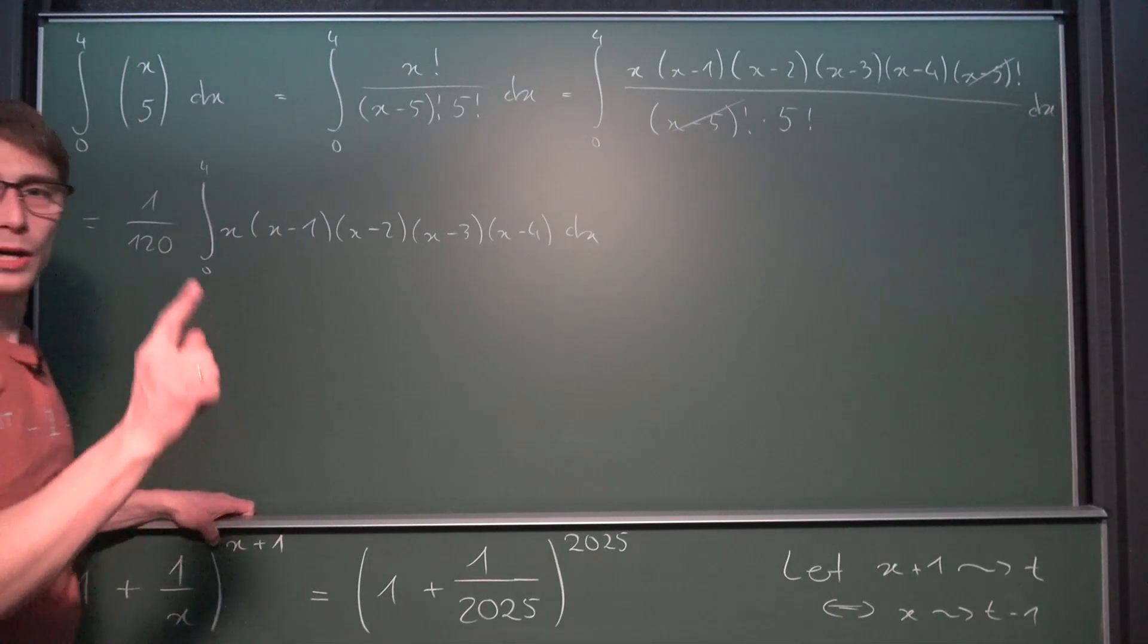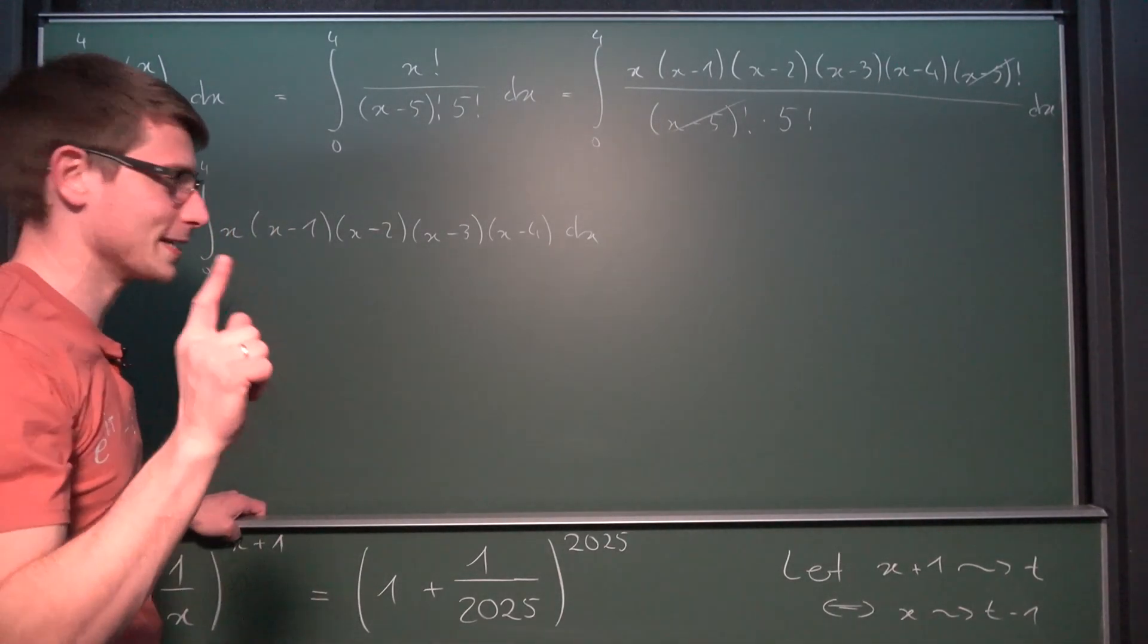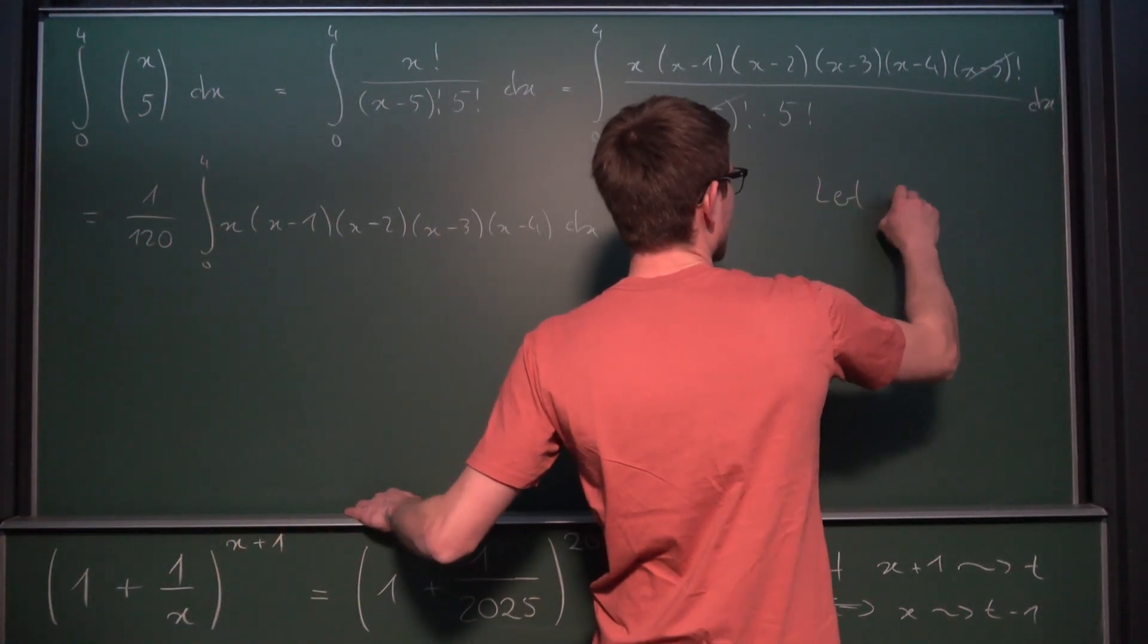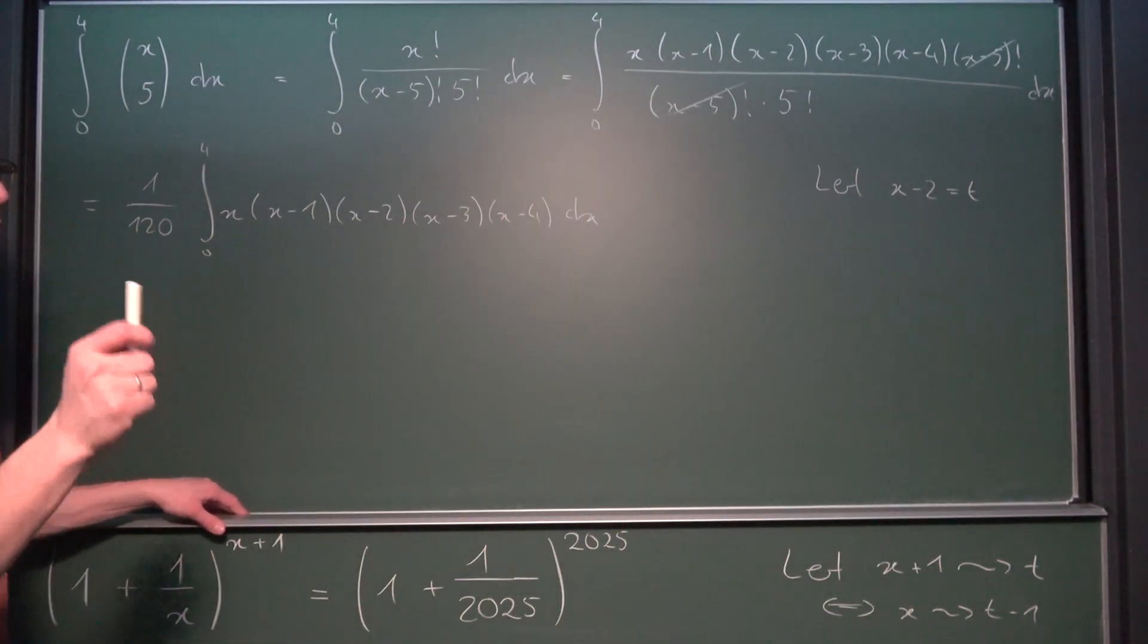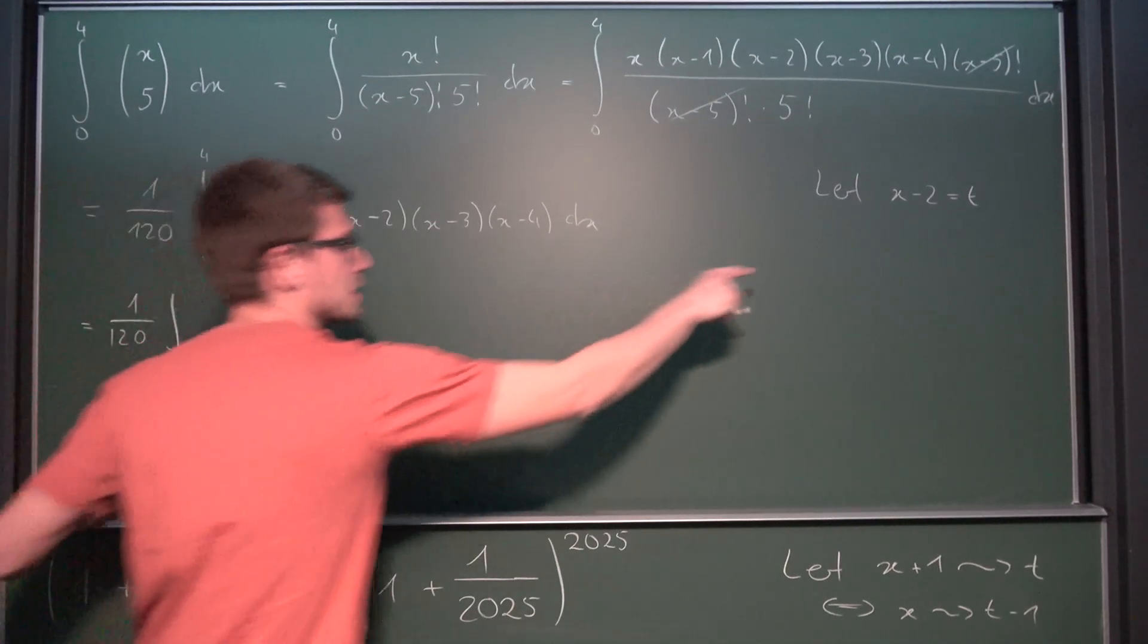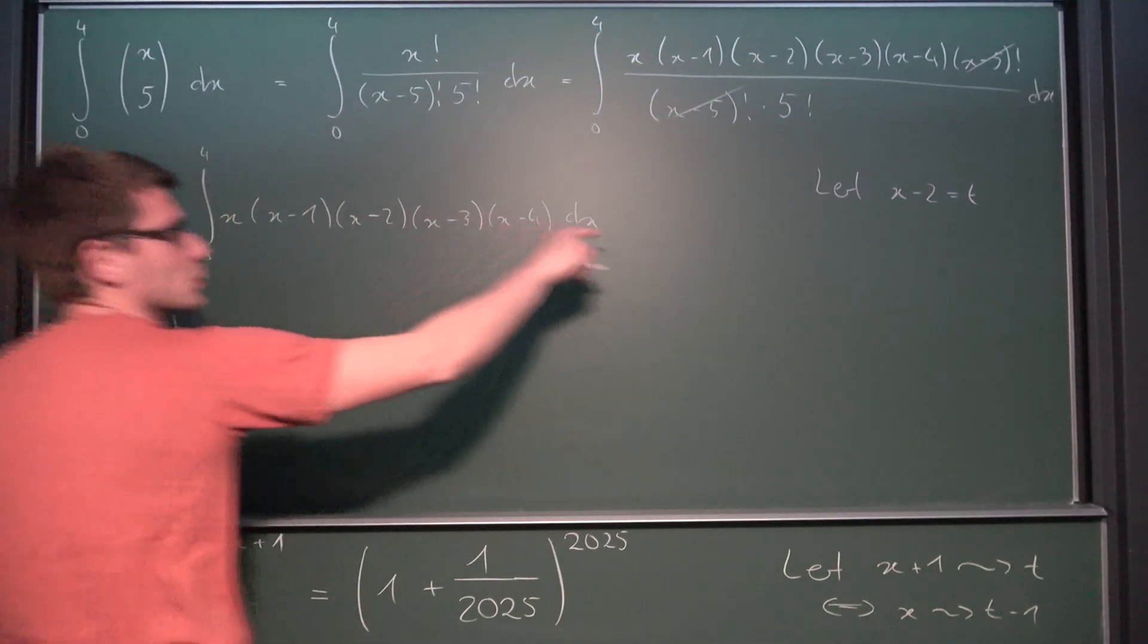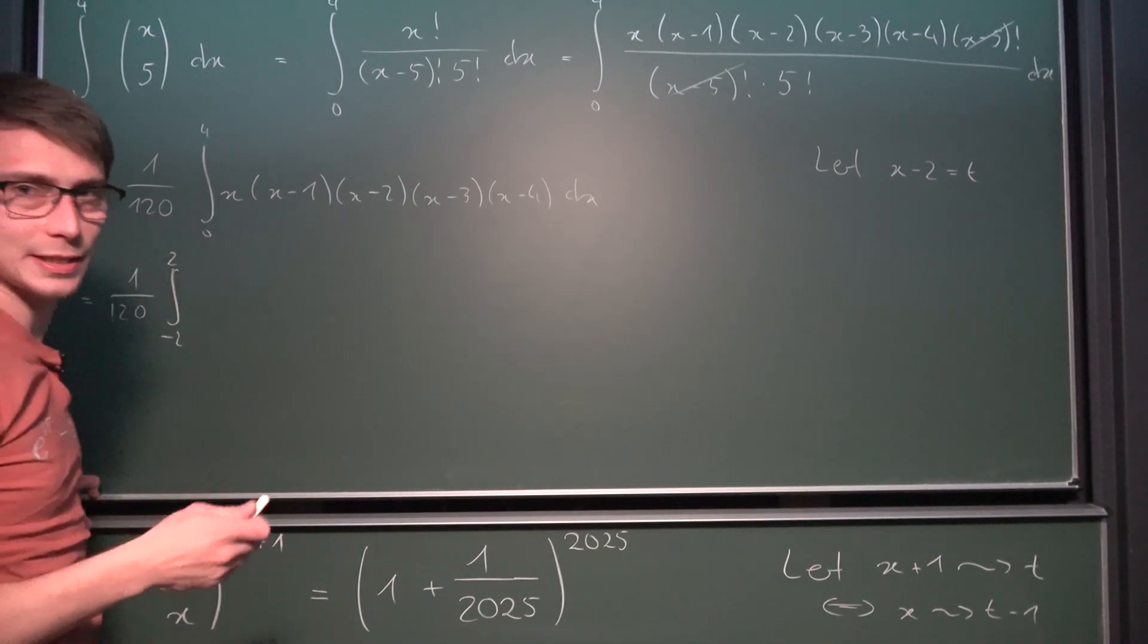What we are going to do is turn this into a symmetric integral. For this we let x minus 2 equal t. Why am I using x minus 2? Because if we take a look at the upper and lower bounds, if x equals 0 we get t equals negative 2, and if x equals 4 we get 4 minus 2 which is 2. So this turns into a symmetric integral.